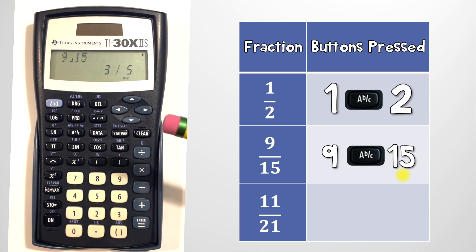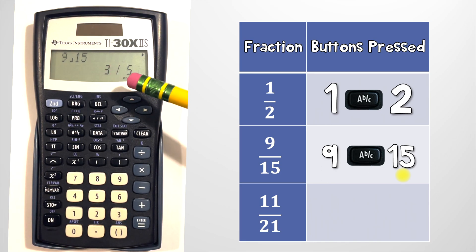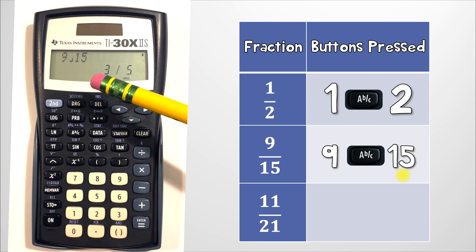But hey what happened? I thought we entered 9 over 15. This is one of the benefits of using a calculator. It actually reduces the fractions for us so even though we entered 9 over 15, as a fraction in simplest form it's really 3 over 5.